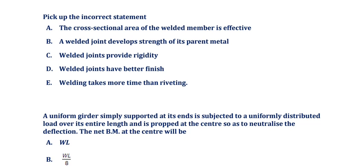Pick up the incorrect statement about welded joints. The options are: the cross-sectional area of the welded member is effective (correct); a welded joint develops the strength of its parent metal (correct); welded joints provide rigidity (correct); welded joints have a better finish compared to riveting and bolting (correct); welding takes more time than riveting (incorrect — riveting takes more time than welding). So option E is the correct answer — the incorrect statement.